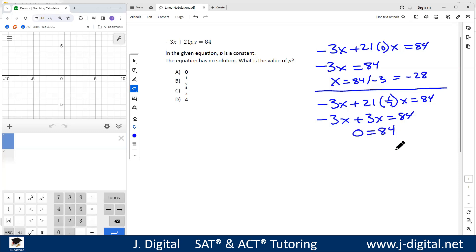When the variables drop out and both sides of the equation have different values, then that's no solution. So it has no solution when p is 1/7.